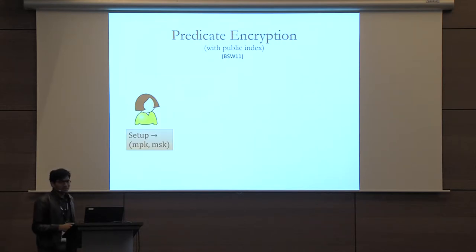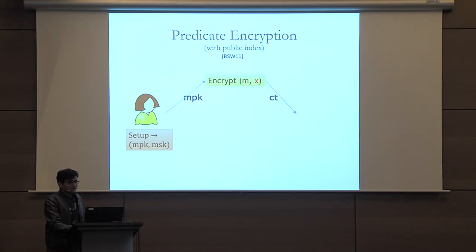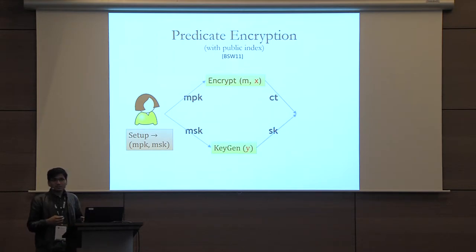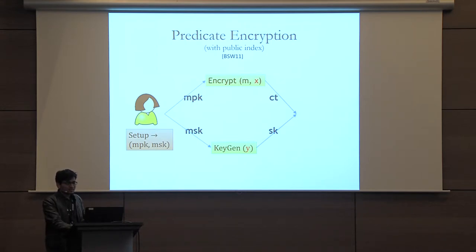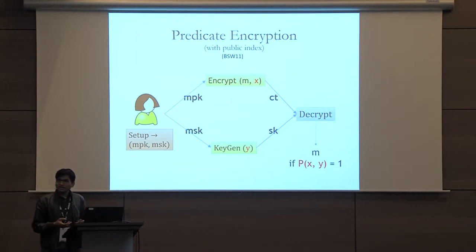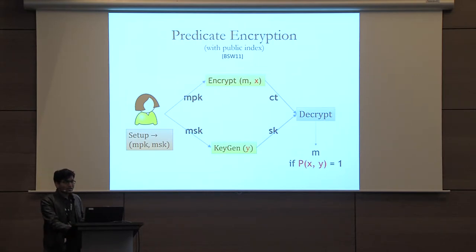In a predicate encryption scheme, we have a trusted authority that generates a master public key and a master secret key. The master public key can be used by anyone to encrypt messages under some value X. The master secret key is used to generate keys for some value Y. When a ciphertext and a secret key are put together into the decryption algorithm, we are able to recover the message if a certain predicate evaluates to true on X and Y. But if the predicate is false, then we want to hide the message. Here we do not care about hiding X or Y.